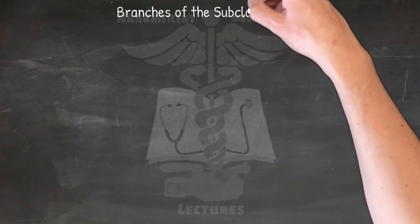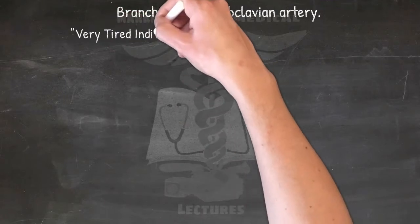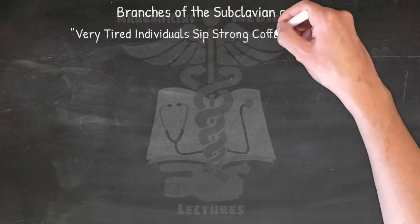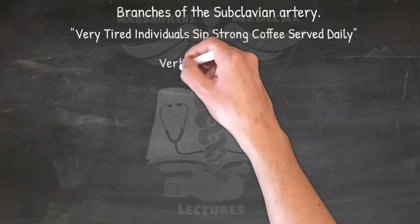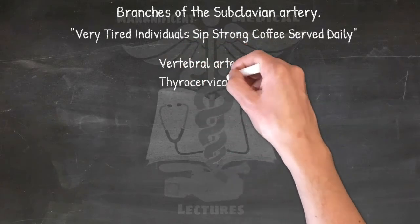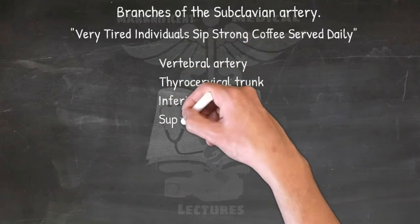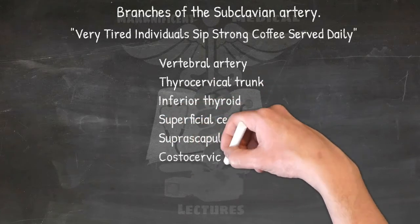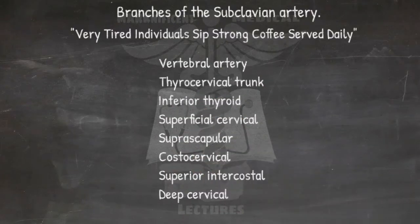For branches of the subclavian artery, use: 'Very tired individuals sip strong coffee served daily.' These represent: vertebral artery, thyrocervical trunk, inferior thyroid, superficial cervical, suprascapular, costocervical, superior intercostal, and deep cervical.